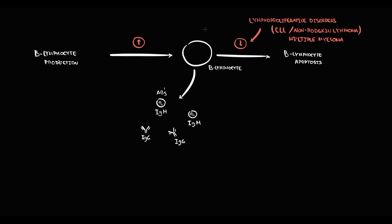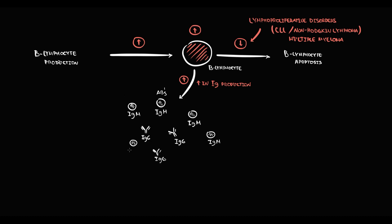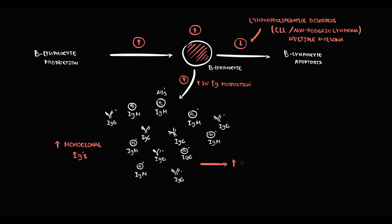If production increases or apoptosis decreases, B-lymphocytes increase and produce more antibodies. Importantly, these are monoclonal antibodies — all IgG antibodies are identical and all IgM antibodies are identical. Increasing monoclonal immunoglobulins raises total protein, which in turn increases erythrocyte sedimentation rate.